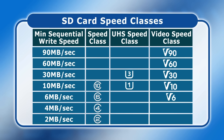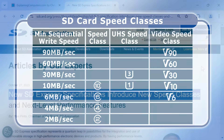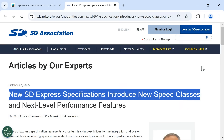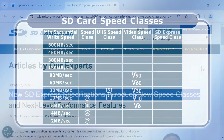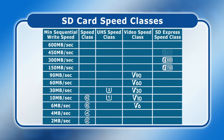Finally, we have the SD Express Speed class. This was introduced in October 2023, and only applies to SD Express cards. Marked as E150 to E600, the SD Express Speed class indicates a minimum read-write performance of 150, 300, 450, or 600 megabytes per second.